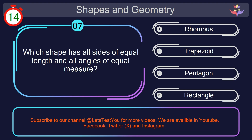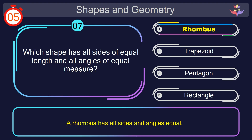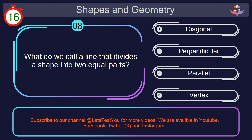Question number 7. Which shape has all sides of equal length and all angles of equal measure? Your countdown started. Here we go. The correct answer is option A. Rhombus. A rhombus has all sides and angles equal.